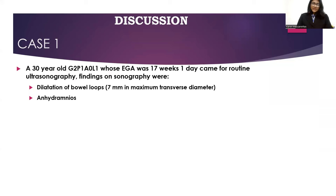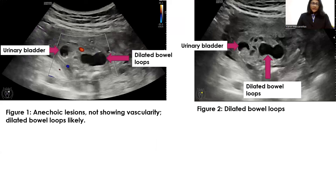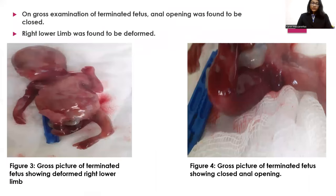Discussion, first case: a 30-year-old G2P1A0L1 with an estimated gestational age of 17 weeks and 1 day came for routine ultrasonography. Findings were dilatation of bowel loops, 7mm in maximum transverse diameter, and anhydramnios. Images show the dilated bowel loops in relation to the urinary bladder. On gross examination of the terminated fetus, the anal opening was found to be closed and the right lower limb was found to be deformed.